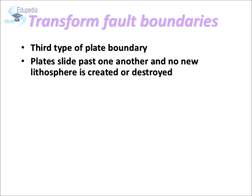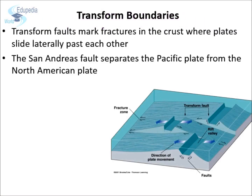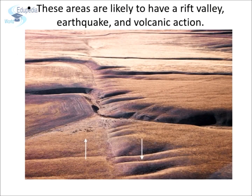The third type of plate boundary is the transform plate boundary. Here, two plates simply slide past each other along the fault, rubbing and scraping material from each other as they move. The San Andreas Fault is the best example, where the North American plate is sliding past the Juan de Fuca plate. Such areas are prone to frequent earthquakes and some volcanic action.